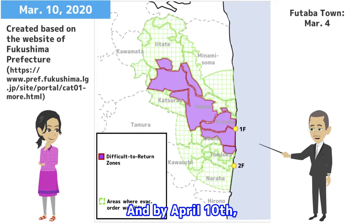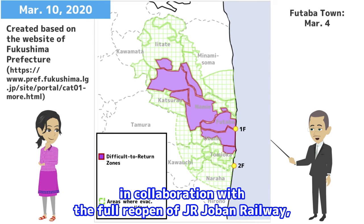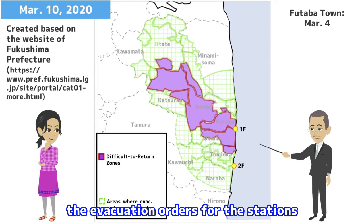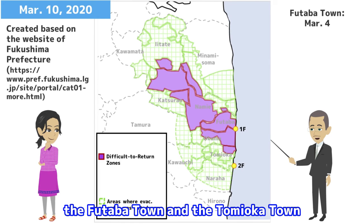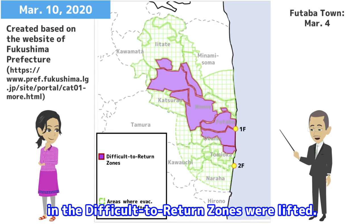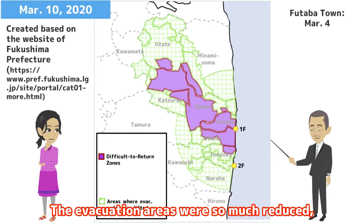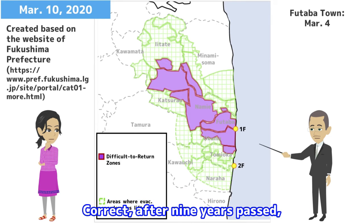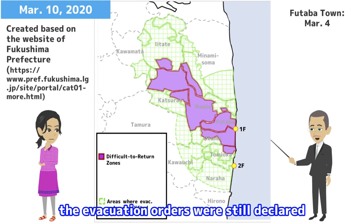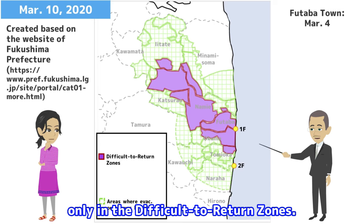By April 10, in collaboration with the full reopening of JR Joban Railway, the evacuation orders for the stations and surrounding roads in Okuma town, Futaba town and Tomioka town in the difficult-to-return zones were lifted. The evacuation areas were much reduced compared with the time shortly after the accident. After nine years, the evacuation orders were still declared only in the difficult-to-return zones.